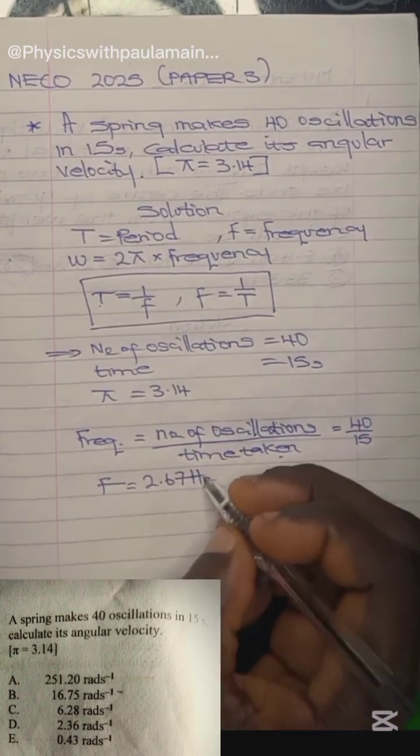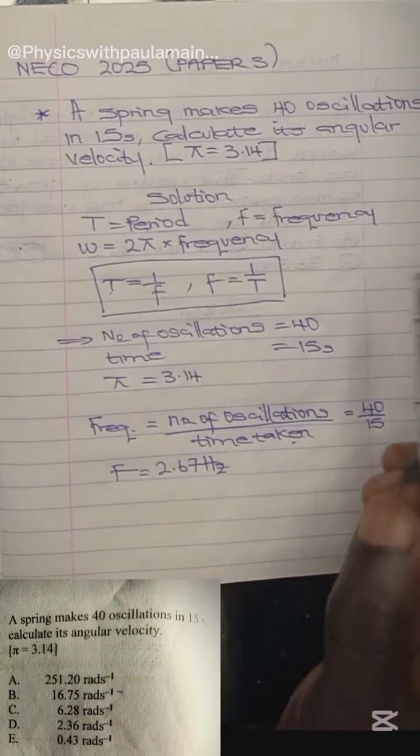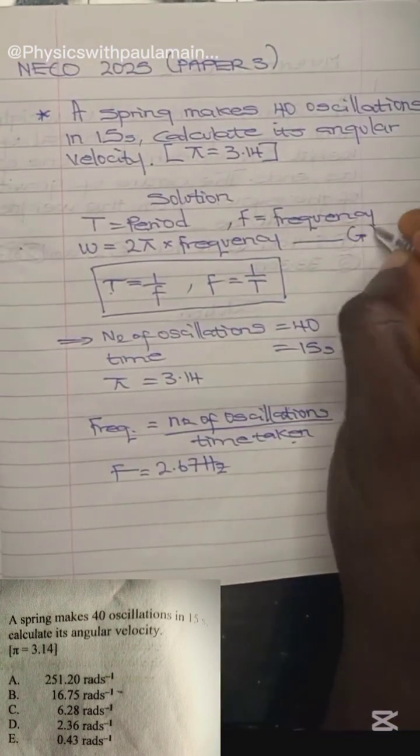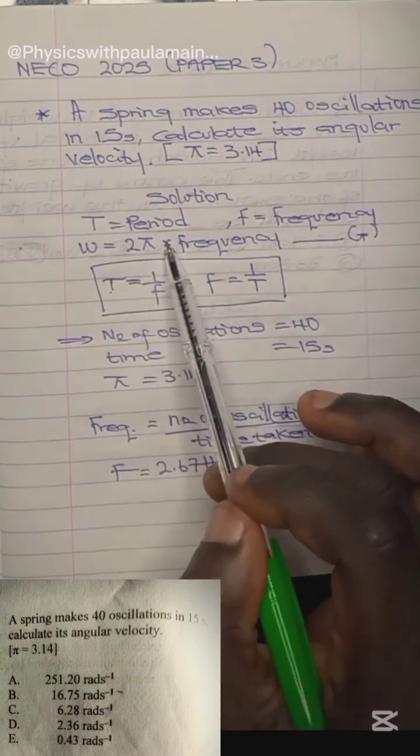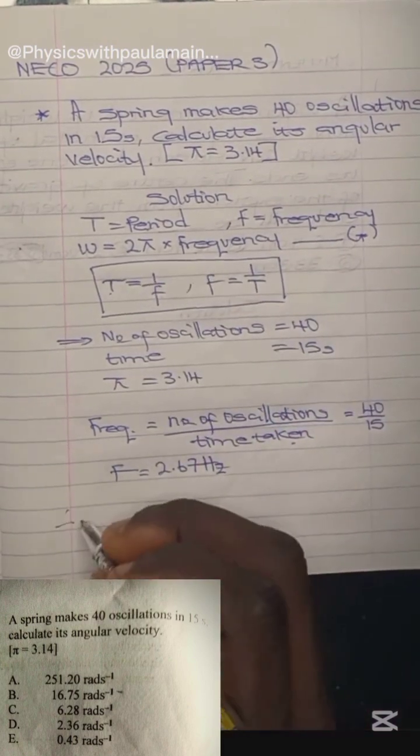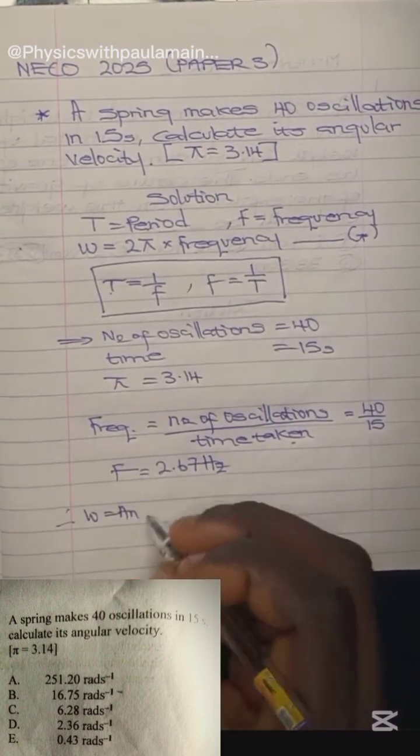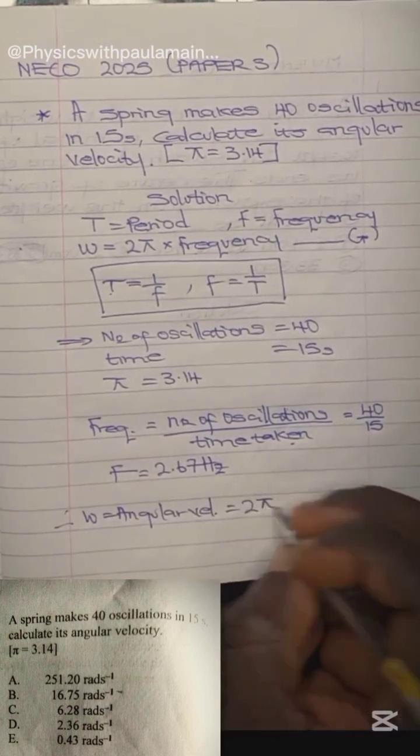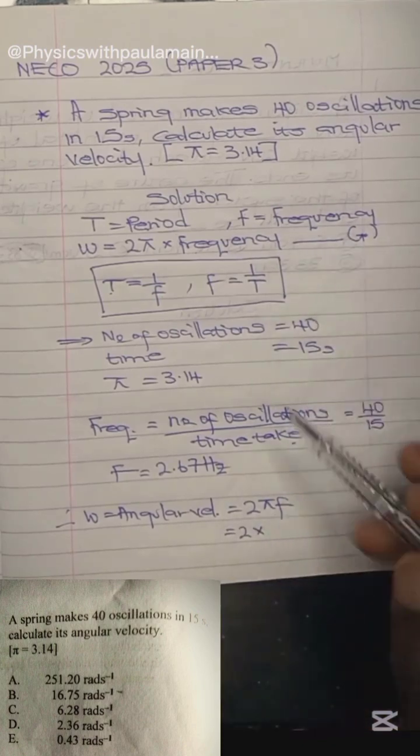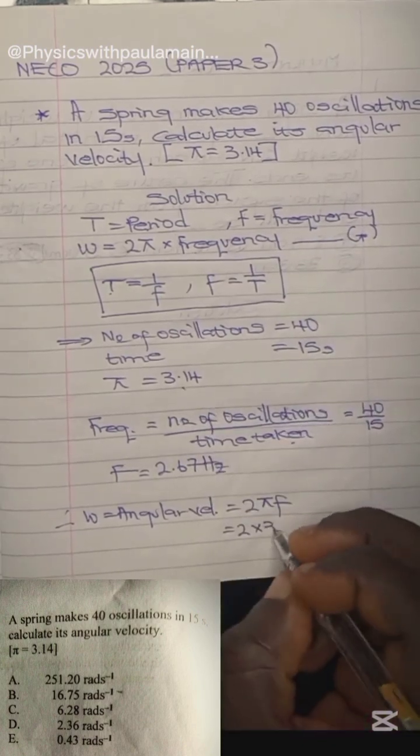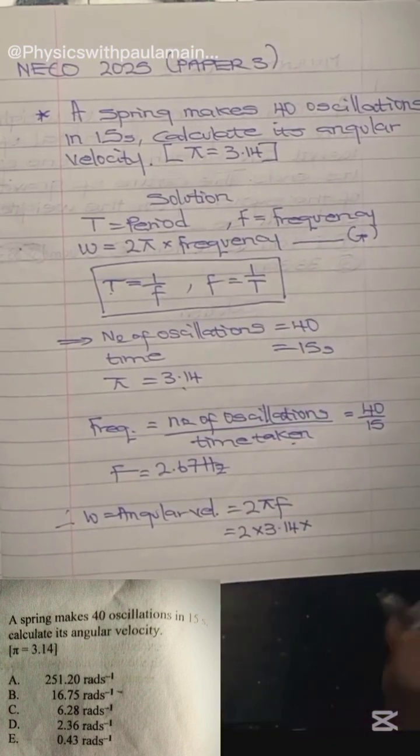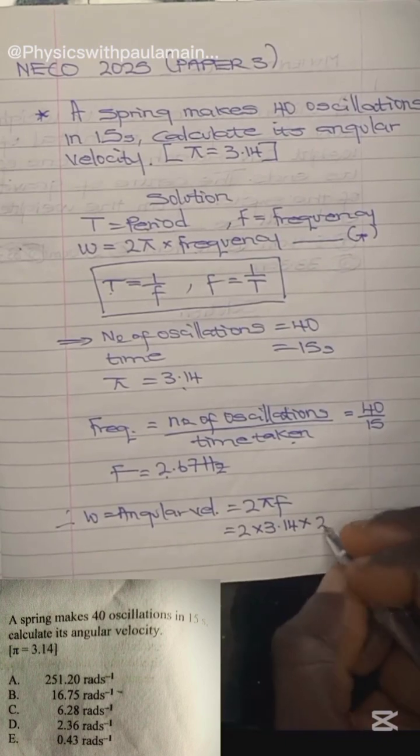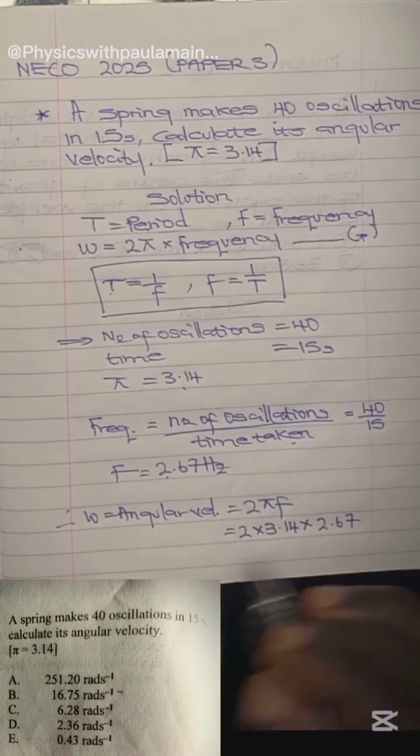Now recall I wrote a formula for angular velocity which is 2π times frequency. Therefore, angular velocity ω equals 2πf. That would be 2 times π, given as 3.14, times the frequency 2.67. Multiplying this gives 16.75.